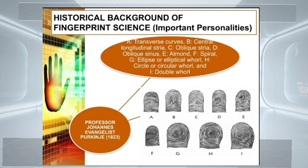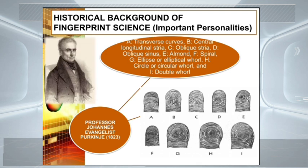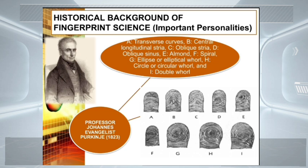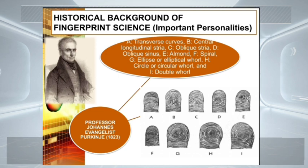Purkinje's nine types of fingerprint patterns include: the transverse curve, the central longitudinal istria, the oblique istria, the oblique sinus, the almond, the spiral, the ellipse or elliptical whorl, the circle or circular whorl, and the double whorl.